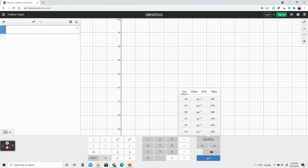Now mine is already selected for trig but if yours isn't you could just click on the trig there and choose the inverse sine.